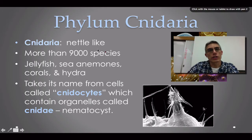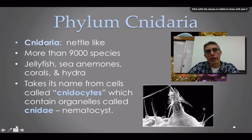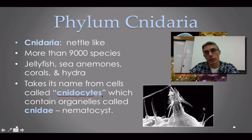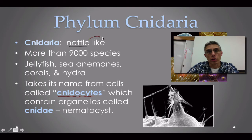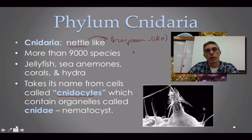The phylum itself takes its name from a special cell produced only in these animals called cnidocytes. The word cnidarian refers to nettle, and nettle refers to a sort of harpoon-like structure. These animals have a special stinging cell that allows them to subdue their prey and also aids in defense.